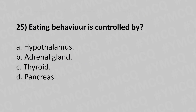Now let's move to question number twenty-five: Eating behavior is controlled by which of the following? Option A: hypothalamus. Option B: adrenal gland. Option C: thyroid. Option D: pancreas. The answer is Option A: hypothalamus.